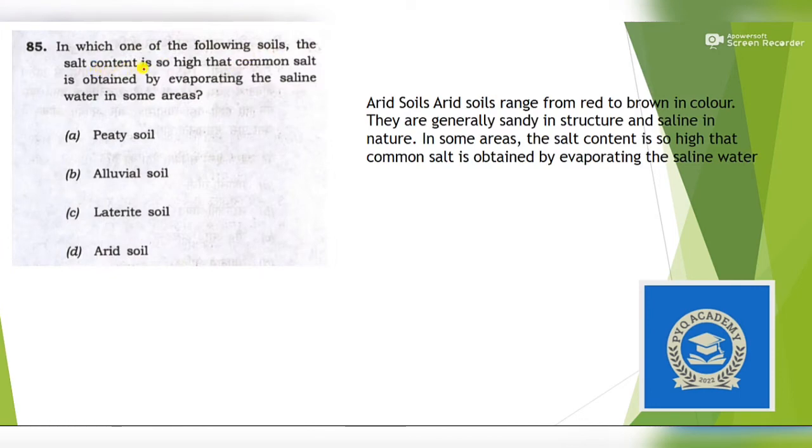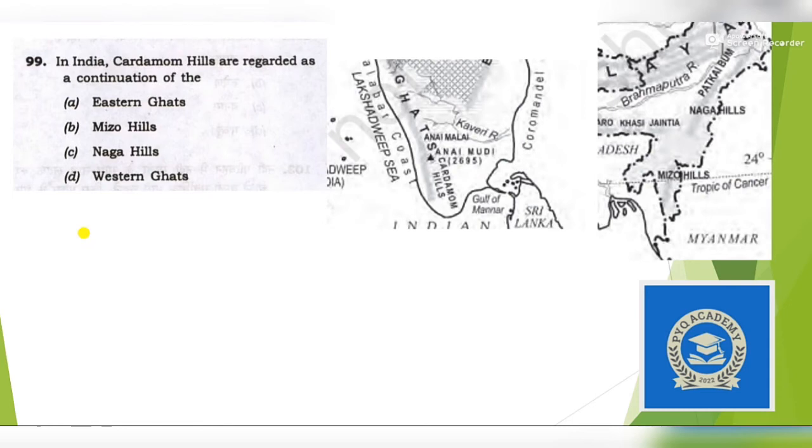Next question: In which one of the following soils is the salt content so high that common salt is obtained by evaporating the saline water in some areas? This is directly given from Class 12 Geography. When you read about arid soils, you will find they are generally sandy in structure and saline in nature. In some areas the salt content is so high that common salt is obtained by evaporating the saline water. Our answer is arid soil.